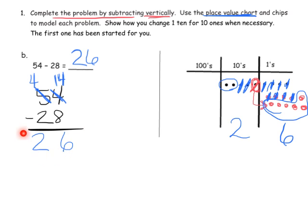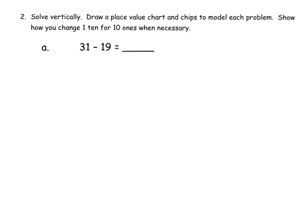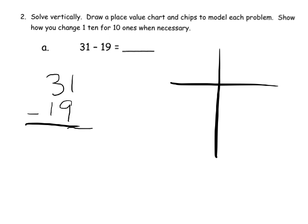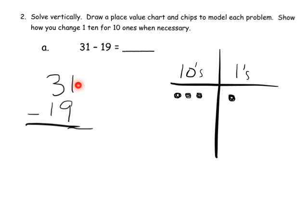You can see what looks like the standard algorithm. However, we're using the place value chart as a scaffold. Let's do a little bit of practicing. We're going to take 31 minus 19 and write it vertically. Here are our tens and our 1s — let's model 31. 31 is three tens and one 1. Now it says to take away 19, which means in the 1s column we need to take away 9, but we only have 1. So we're going to have to do some unbundling, taking one dot from the tens column and cashing it in for 10 ones.